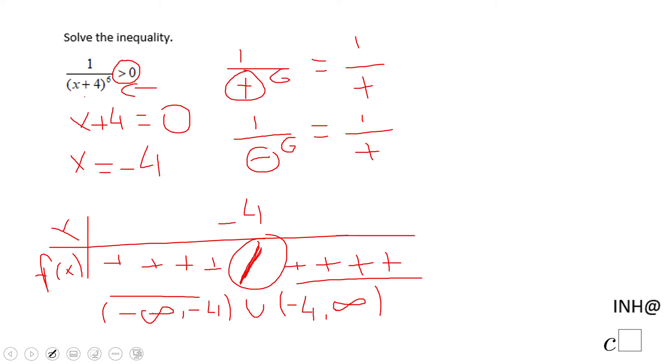When I said always, I meant there is no value for which the function is less than zero. All the time the function is greater than zero. The only time the function is undefined is at x equals negative four. That's the reason we need to write the interval like this.